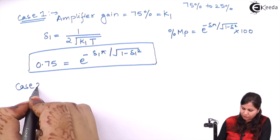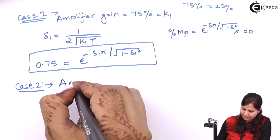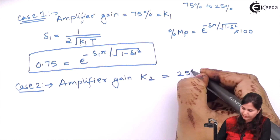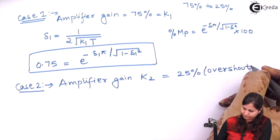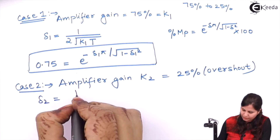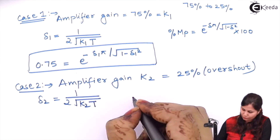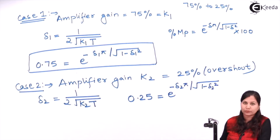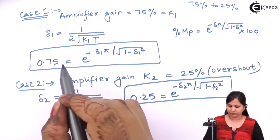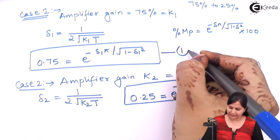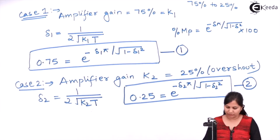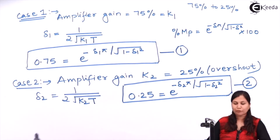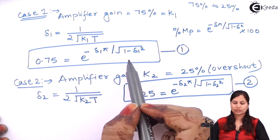In the second case, we reduce the overshoot to 25%, with amplifier gain k2. So δ2 = 1 / (2√(k2·T)). The overshoot equation gives: 0.25 = e^(−δ2·π / √(1 − δ2²)). We number these as equations 1 and 2. Solving equation 1 gives δ1, and solving equation 2 gives δ2.